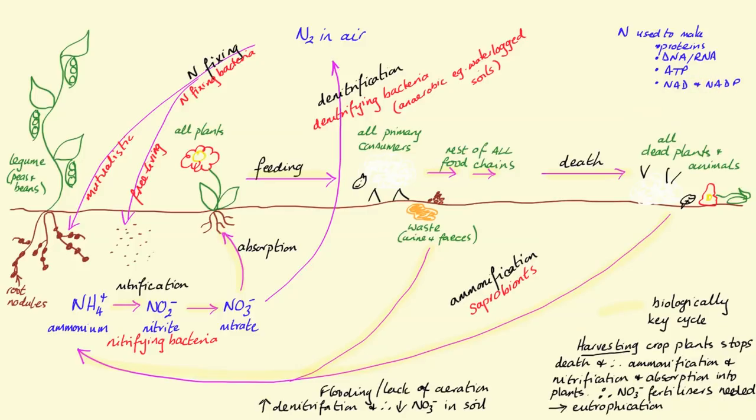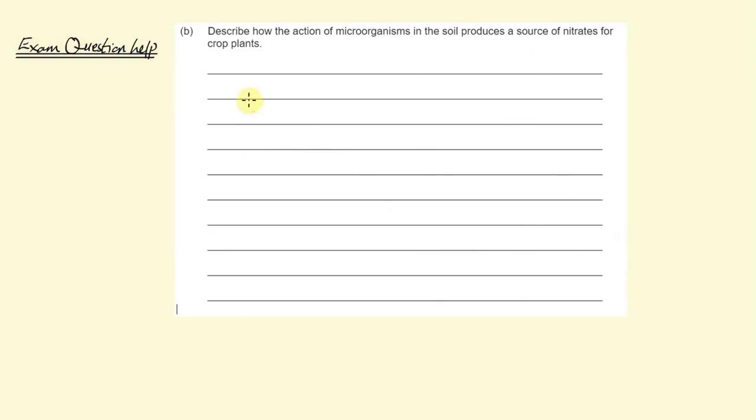Onto exam questions. Describe how the action of microorganisms in the soil, I should have underlined that, produces nitrates. So here am I remembering all the way that nitrates are made by bacteria in the soil. So here's my quick little summary of the previous diagram, and this fits in with the mark scheme.